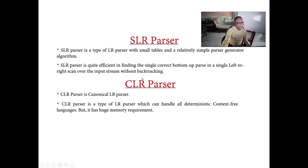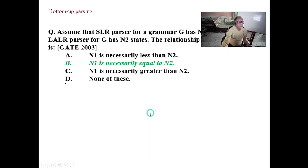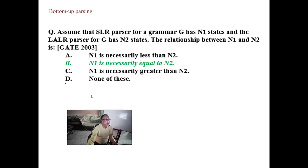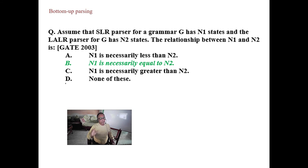SLR is the simple version, CLR is more powerful — it is a bottom-up parsing technique with more power. I will go into details of CLR and SLR in the next Saturday class. Assume an SLR parser for a grammar has n1 states and an LALR parser has n2 states — the relationship between n1 and n2 is that n1 is necessarily equal to n2. I will go into that detail further.